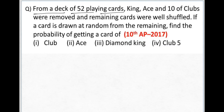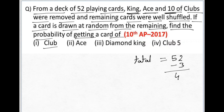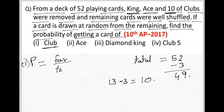From a deck of 52 playing cards, King, Ace, and 10 of clubs were removed and the remaining cards were well shuffled. If a card is drawn at random from the remaining, find the probability of getting a club. Total cards were 52 but 3 cards were removed, so total remaining is 49. Generally there are 13 clubs, but 3 were removed, so only 10 clubs are left. Probability equals 10 divided by 49.